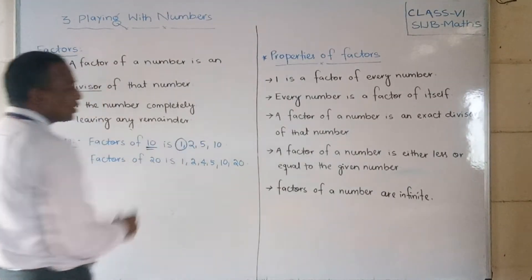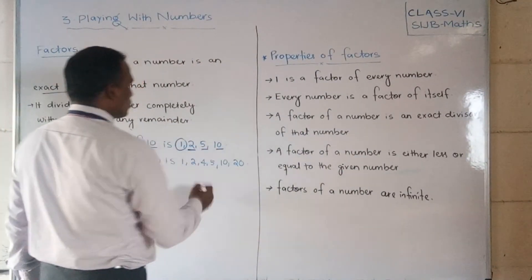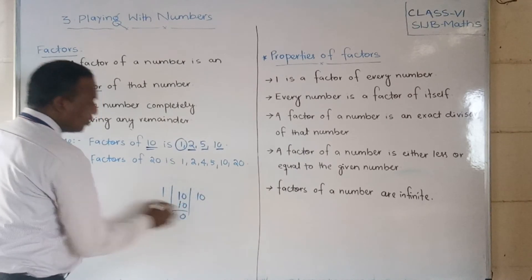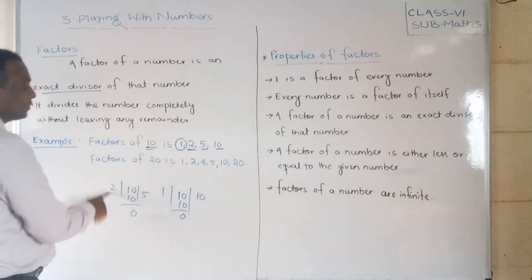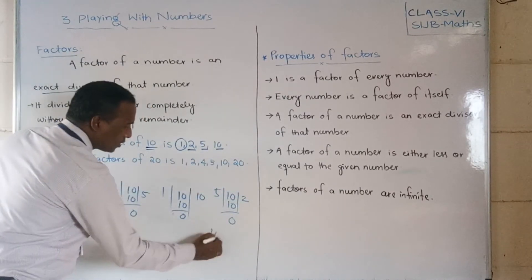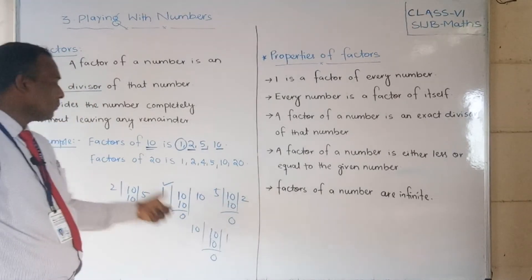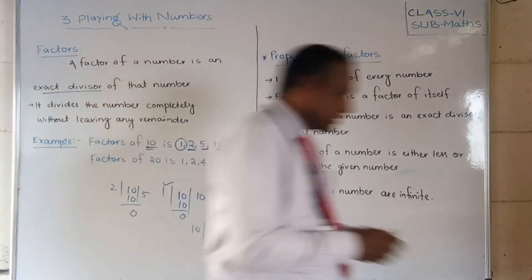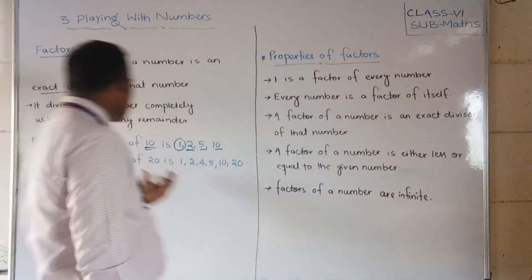Let's find the factors of 10. The factors are 1, 2, 5, and 10. We can check: 10 ÷ 1 = 10 remainder 0; 10 ÷ 2 = 5 remainder 0; 10 ÷ 5 = 2 remainder 0; 10 ÷ 10 = 1 remainder 0. So 1, 2, 5, and 10 are all exactly divisible and are called the factors of 10.